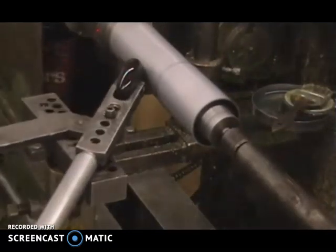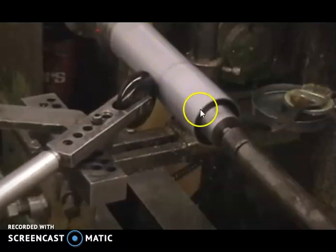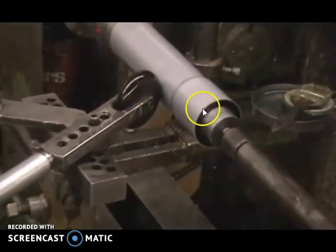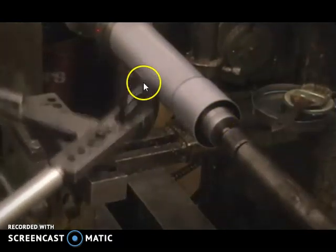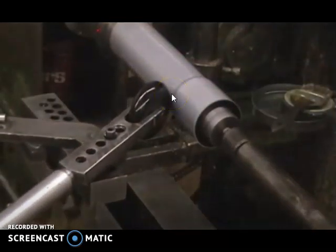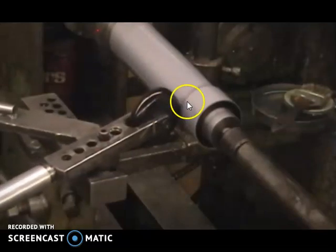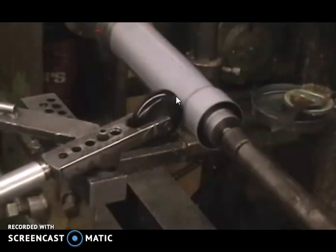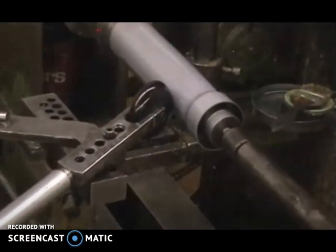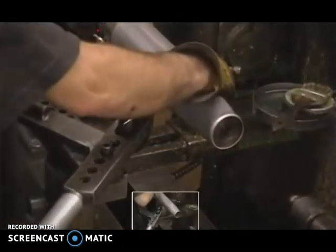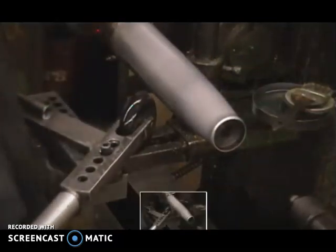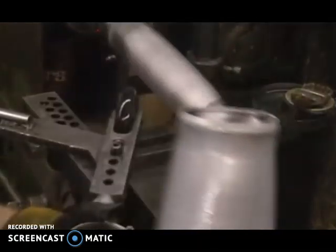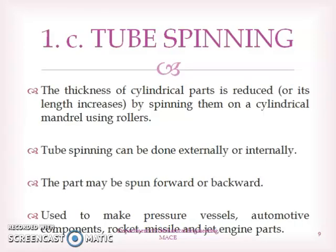In the tube spinning video, this is the cylindrical workpiece placed over a mandrel. The mandrel is rotated and pressure is applied with a roller towards the cylindrical workpiece. As you apply pressure, you can see the diameter decreases and the length increases — this is how a tube is made using the tube spinning process. Once the process is completed, the tube is taken out.